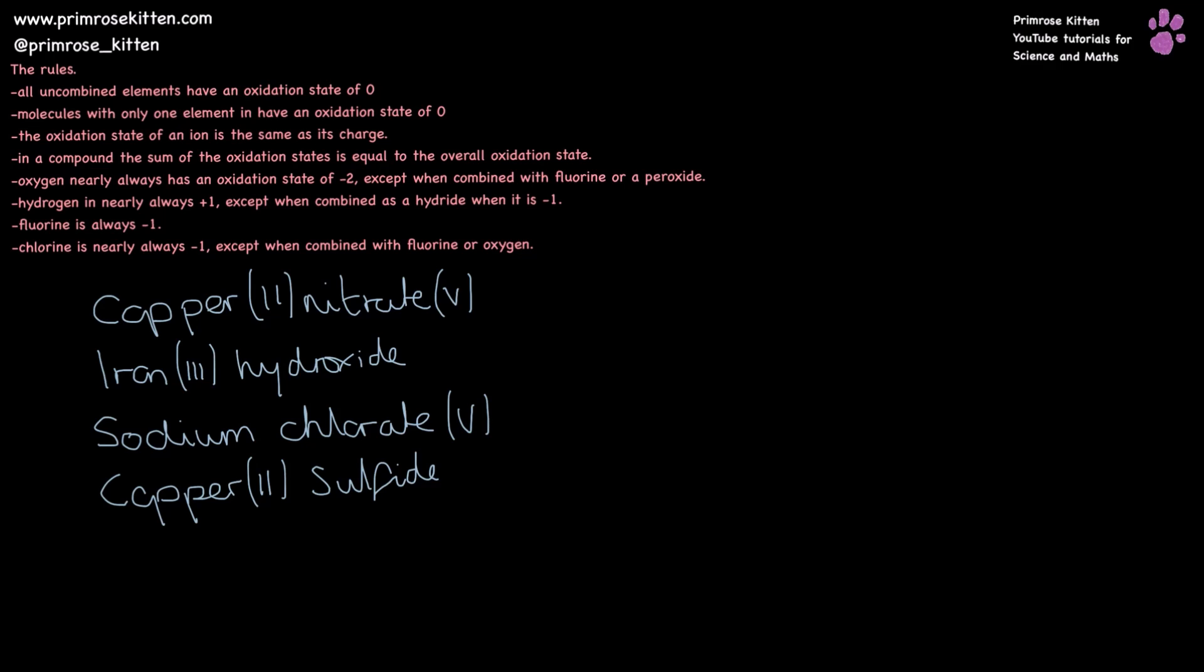So copper(II) nitrate(V). We know that in this situation, copper is going to have a 2+ charge. The nitrogen is going to have a 5+ charge because it's told us that in the name. Nitrate - the ATE bit on the end tells us there's going to be oxygen in there as well. Oxygen is -2, and you should know that the nitrate ion overall is going to have a -1 charge. So we need enough oxygens in there to make sure that the nitrate ion is a -1 charge.